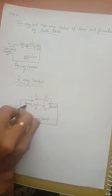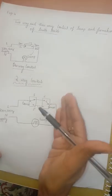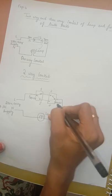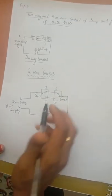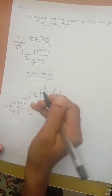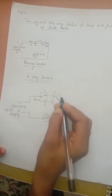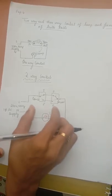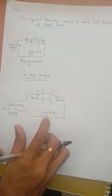One terminal will be common-in and the other terminal will be 1 and 1-dash. For the next switch it will be 2, 2-dash, and common-out. For these two switches to control one lamp, the terminals 1 and 2 should be connected in series, and 1-dash and 2-dash should be connected in series. This is how a two-way control circuit looks like.